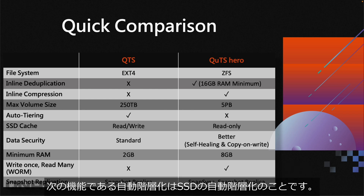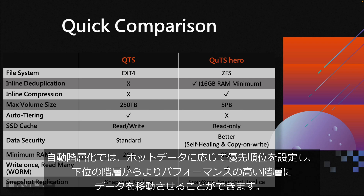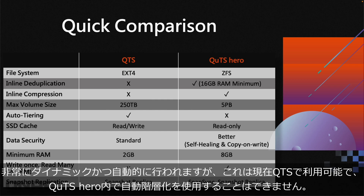Auto tiering — or SSD auto tiering — is available if you have multiple tiers of storage performance, such as SATA hard drives, SATA SSDs, and NVMe SSDs. It automatically moves data between tiers based on how hot that data is. This feature is available on QTS; it is currently not possible to use auto tiering within QUTS Hero.